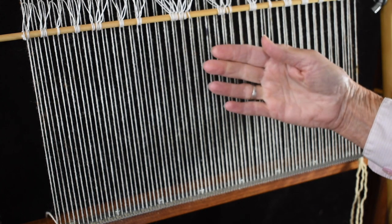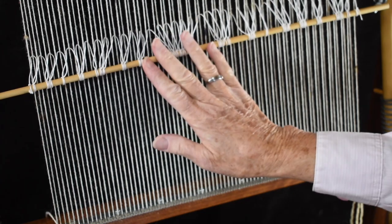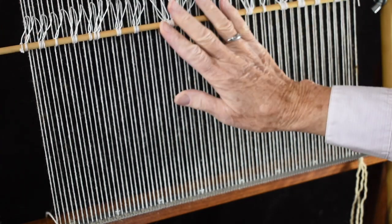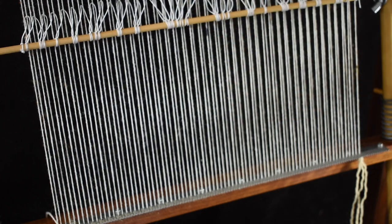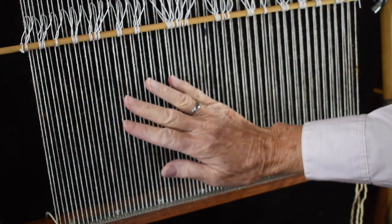So now I have my loom warped up. I have my end twining on, I have my string heddles on, and I have a shed stick in. And very importantly, I have taken the pins out above the top bar. By taking the pins out, the springs put the tension on your weaving.